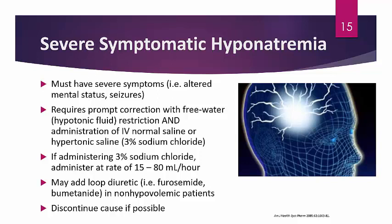You want to correct sodium aggressively but not too aggressively, because over-correction can cause complications. In non-hypovolemic patients (euvolemic or hypervolemic), you can add a loop diuretic if body water stores are too high — such as furosemide, bumetanide, or torsemide. Always discontinue the underlying cause if possible. That is the single most important intervention; without fixing the underlying cause, the patient will not be fixed.